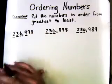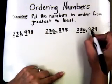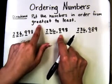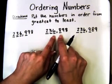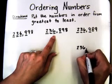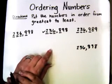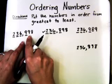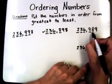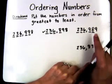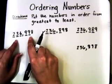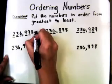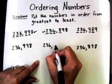Let's look at the hundreds place. We have a 9 in the hundreds place here, an 8 in the hundreds place here, and a 9 in the hundreds place here. So automatically I know that the number with 8 in the hundreds place must be my smallest number. But remember what the directions said: greatest to least. So I know it's the smallest, and I'm going to put it last. I'll put a little check beside it. Now for the remaining two, let's look at the tens place. In the tens place in this number I have a 9, and in the tens place in this number I have an 8. That tells me what I need to know — 8 is smaller than 9. So 236,998 is going to be the greatest number of the three, and 236,989 will be in the middle.